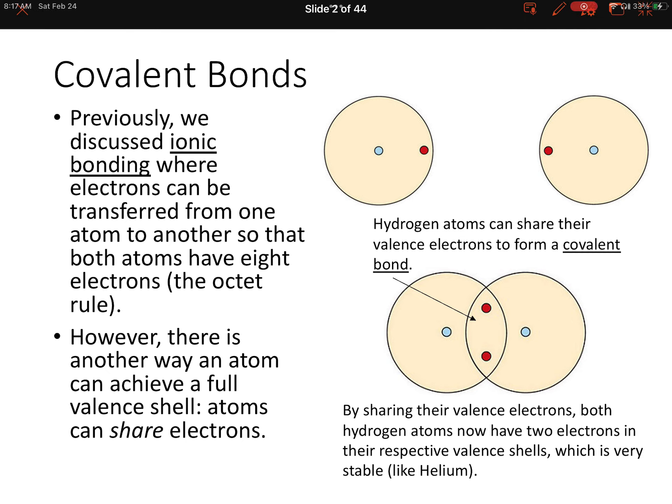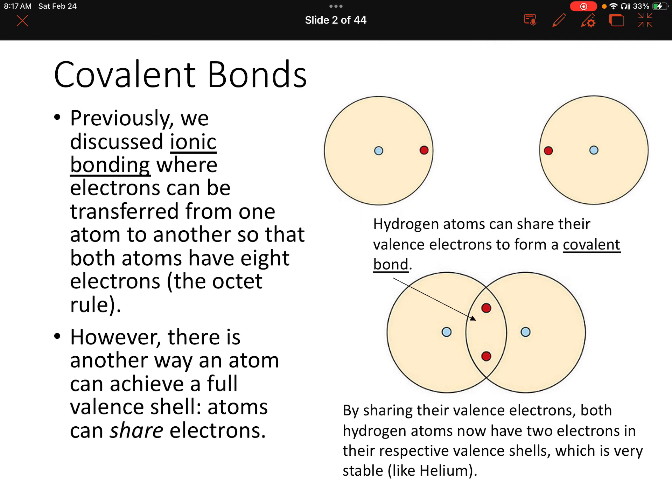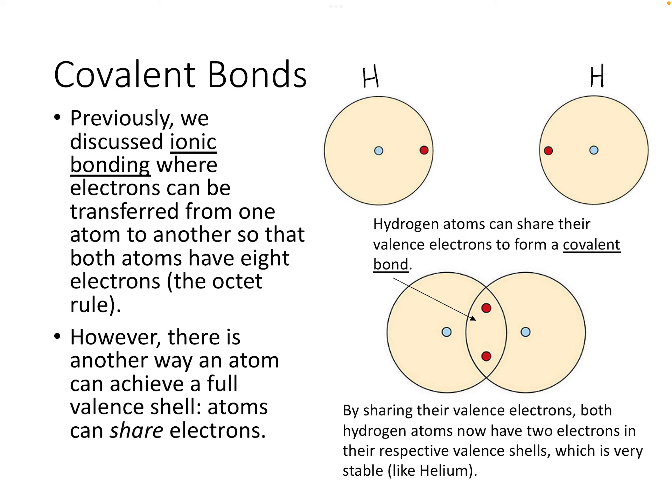Let's look at the example of two hydrogen atoms. These two hydrogen atoms are separate from each other, and they're actually unstable on their own. But if they get close enough to each other, they can form a molecular compound and share their two valence electrons so that each of them has those two valence electrons. By sharing those valence electrons, they're going to be similar to helium, which has two electrons and is a very stable noble gas.